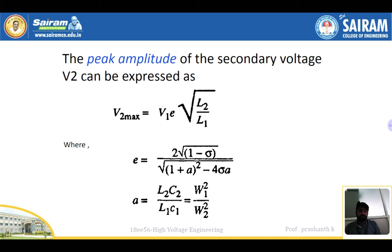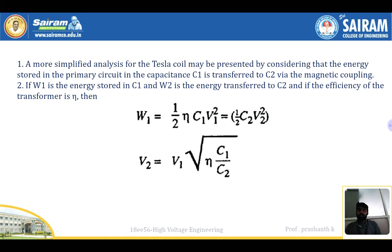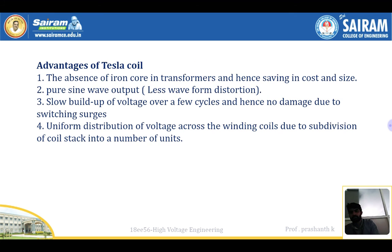The peak amplitude of the output voltage V2 can be expressed as: V2_max = V1 × √(L2/L1) × e, where e = 2√(1−σ²) / √(1 + a² − 4σa), and a = √(L2·C2 / L1·C1) = ω1²/ω2². In a simplified analysis, energy stored in the primary circuit via capacitor C1 is transferred to C2 via magnetic coupling. The efficiency of the transformer is given by: (1/2)·C2·V2² = η·(1/2)·C1·V1², giving V2 = V1 × √(η·C1/C2).